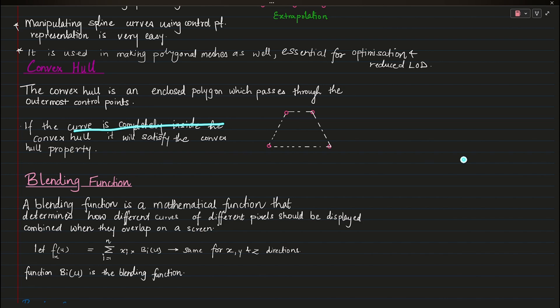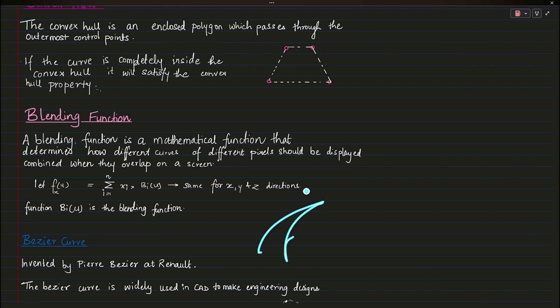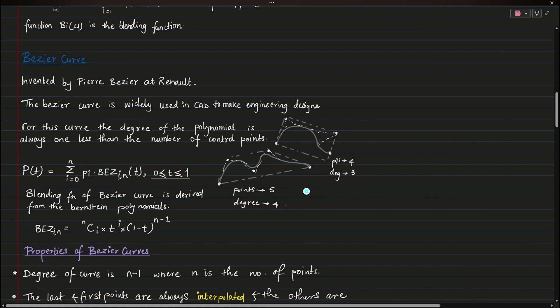The blending function basically determines how different curves and pixels should be displayed when they overlap on a screen. So when a curve is drawn, the blending function determines how the curve and pixels interact. This is the general form of the blending function.